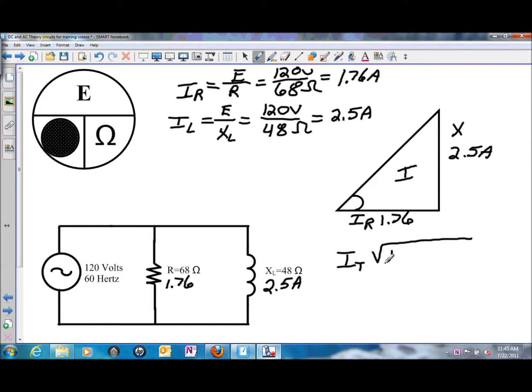I total will be IR squared plus IL squared, and the square root of that. Or 1.76 amps of resistive current squared plus 2.5 amps of reactive current squared will give us a total current flow in this circuit of 3.057 amps. And that is the hypotenuse, or the total current.